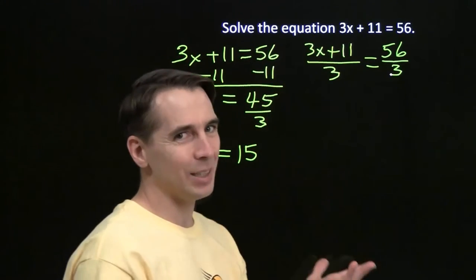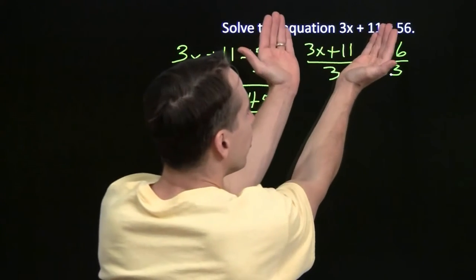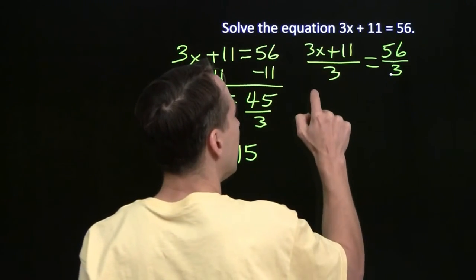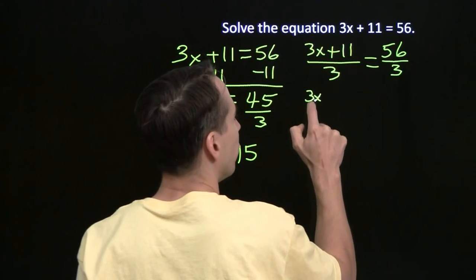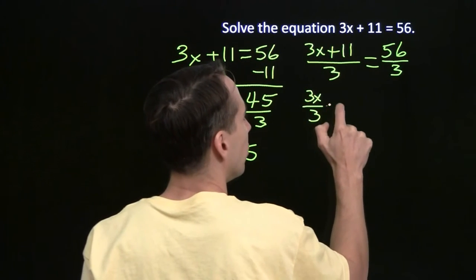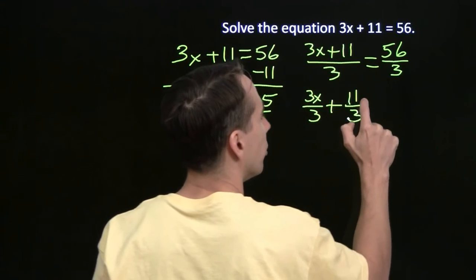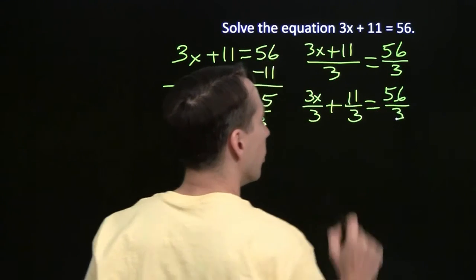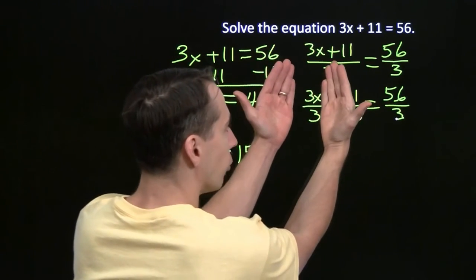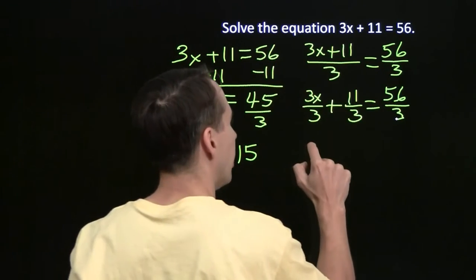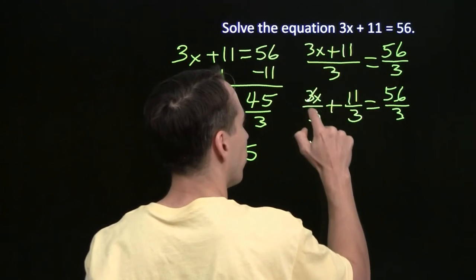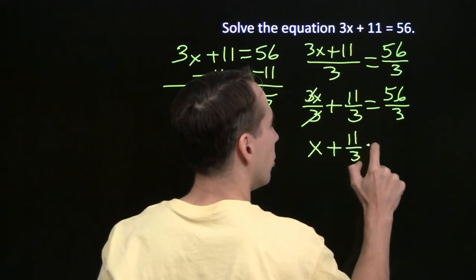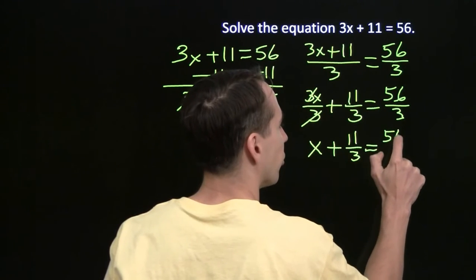Now here we can't simply cancel the 3's. This numerator is a sum, 3x plus 11. So, in order to do any canceling, we first have to separate this. This is the sum of two fractions. This is 3x over 3 plus 11 thirds, and that's still equal to 56 over 3. That hasn't gone anywhere. Now we can cancel 3x over 3. Now we can cancel out the 3's and we're left with just x. These cancel out. We have x plus 11 thirds equals 56 over 3.